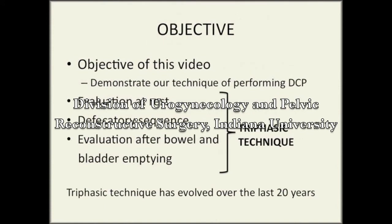The objective of this video is to demonstrate our technique of performing a dynamic defecocoloproctogram, or DCP. The triphasic technique has evolved over more than 20 years and involves evaluation of prolapse at rest, during the defecatory sequence, and after sequential bowel and bladder emptying. Competition for limited space in the levator hiatus among the bladder, small bowel, and rectum makes it important to evaluate prolapse with sequential bowel and bladder emptying.